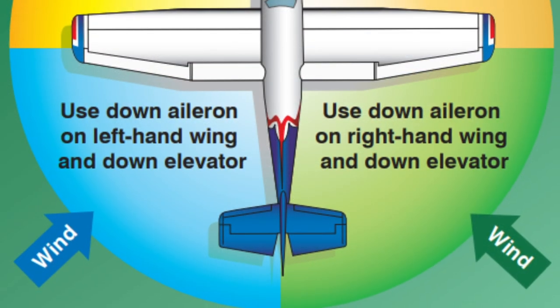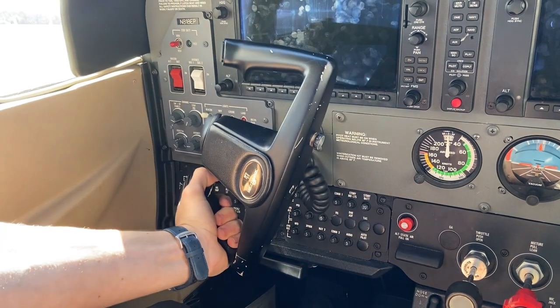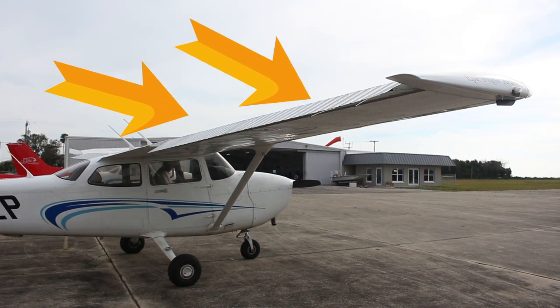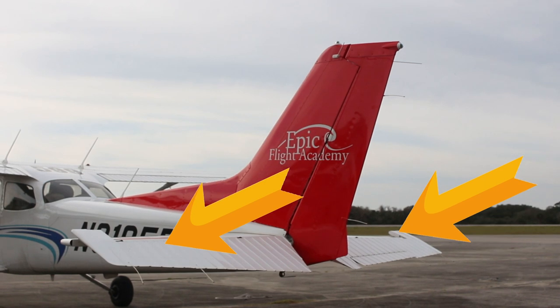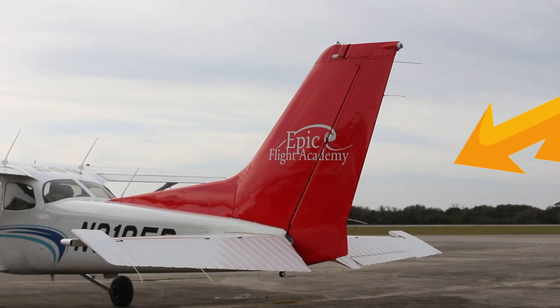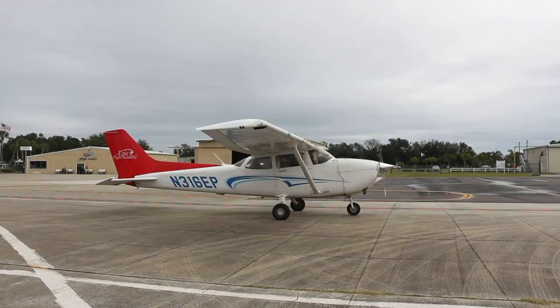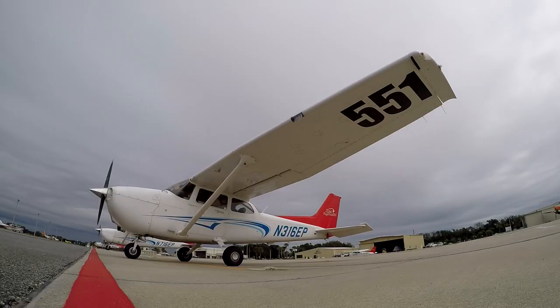When taxiing with quartering tailwinds, the pilot should turn the control wheel away from the wind and apply forward elevator pressure. This causes the aileron on the wing in the wind to deflect downward, as well as the elevator to deflect downward, to maintain directional control while taxiing. This is often referred to as diving away from the wind. Taxiing is a skill that all pilots must learn before beginning to fly. Students need to learn how to maneuver the aircraft on the ground using the proper power settings, while correctly using the rudder pedals and brakes to ensure they can safely and effectively maneuver the airplane while on the ground.